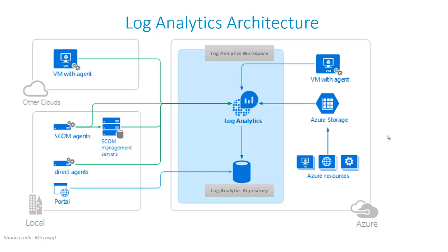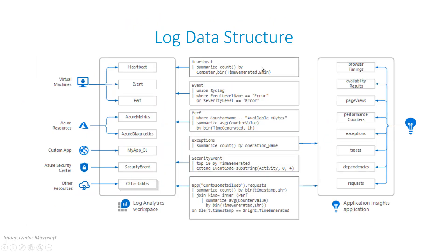The Log Analytics service uses agents to collect data from VMs and physical machines. These VMs and machines can be located anywhere — it could be in Azure, your private data center, or it could be in another cloud like AWS or Google Cloud. It also collects data from various Azure resources like Azure Storage or web apps. Data collected from these sources are turned into records and stored inside various tables, as seen in the examples here.